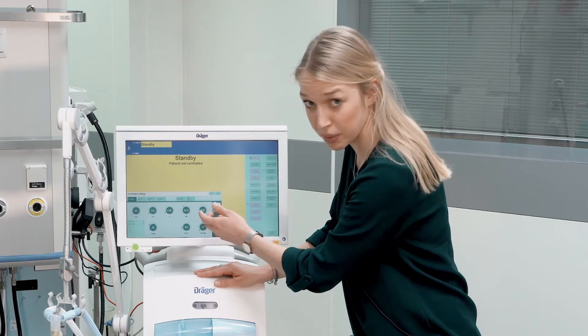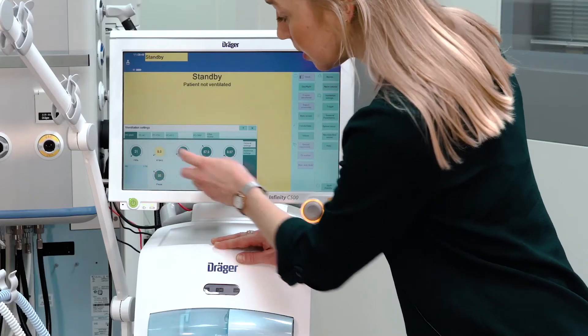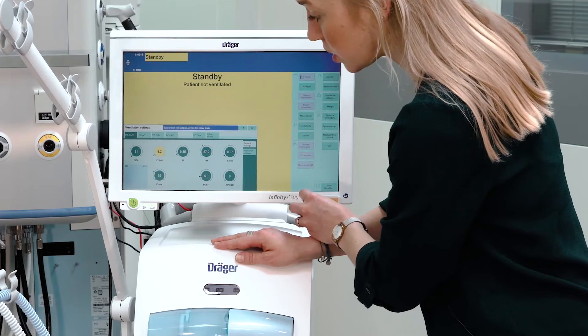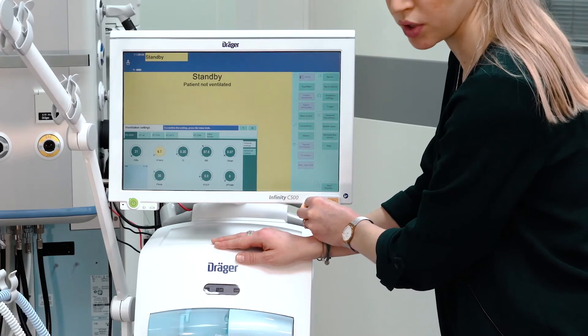To set a parameter individually, select the parameter, turn it to the desired value, and confirm by pressing the rotary knob.